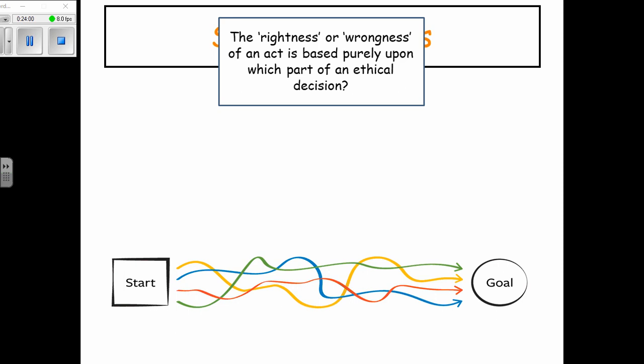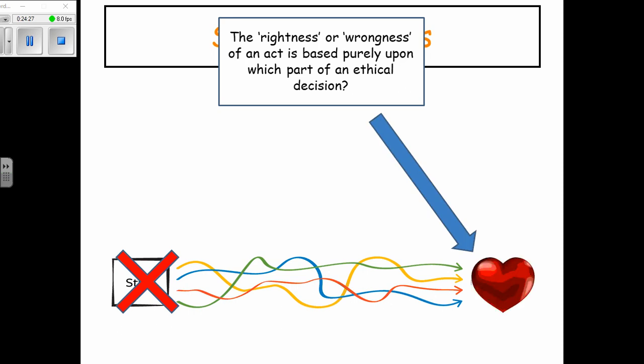Acts utilitarianism is about performing any action as long as it produces the greatest amount of love for the greatest number of people. Actions in themselves aren't intrinsically good or bad — they're only instrumentally good or bad insofar as they produce love as an outcome.